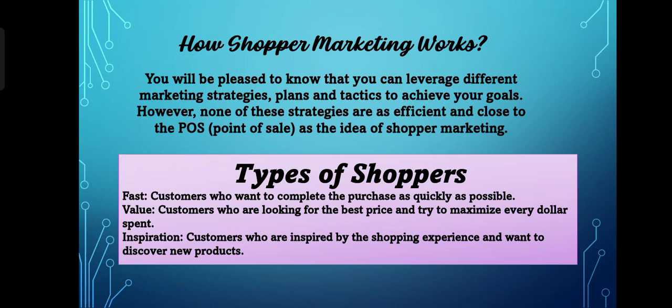The types of shoppers. One is Fast — customers who want to complete a purchase as quickly as possible. These customers are satisfied if the service is fast and accurate, especially when ordering online. If they order online and set a target delivery date, the order must be delivered on time so they remain satisfied.